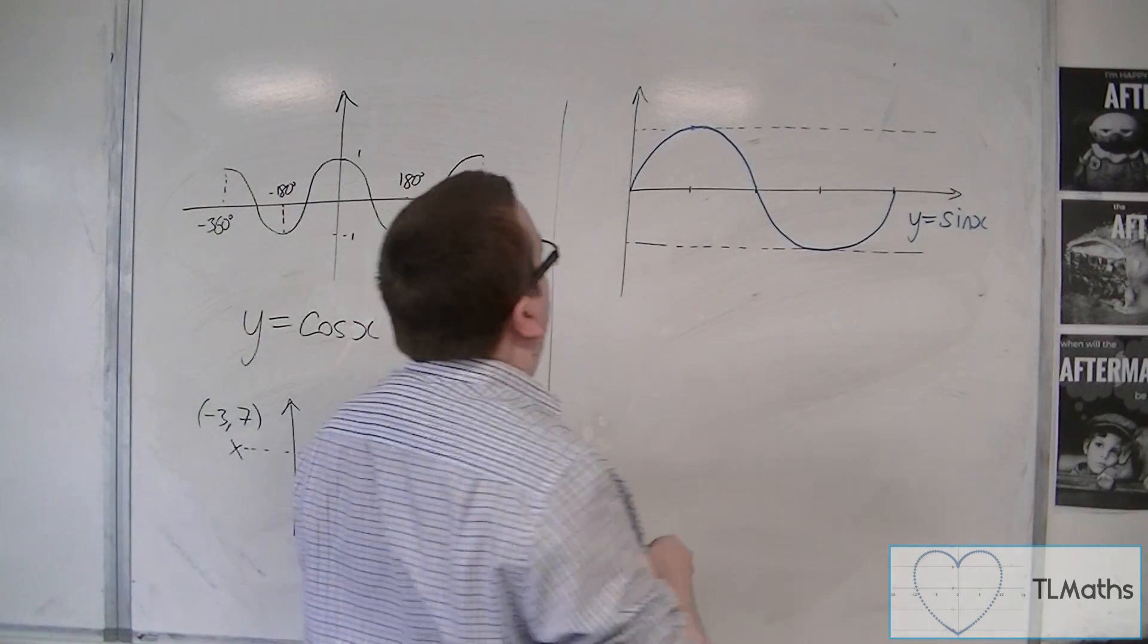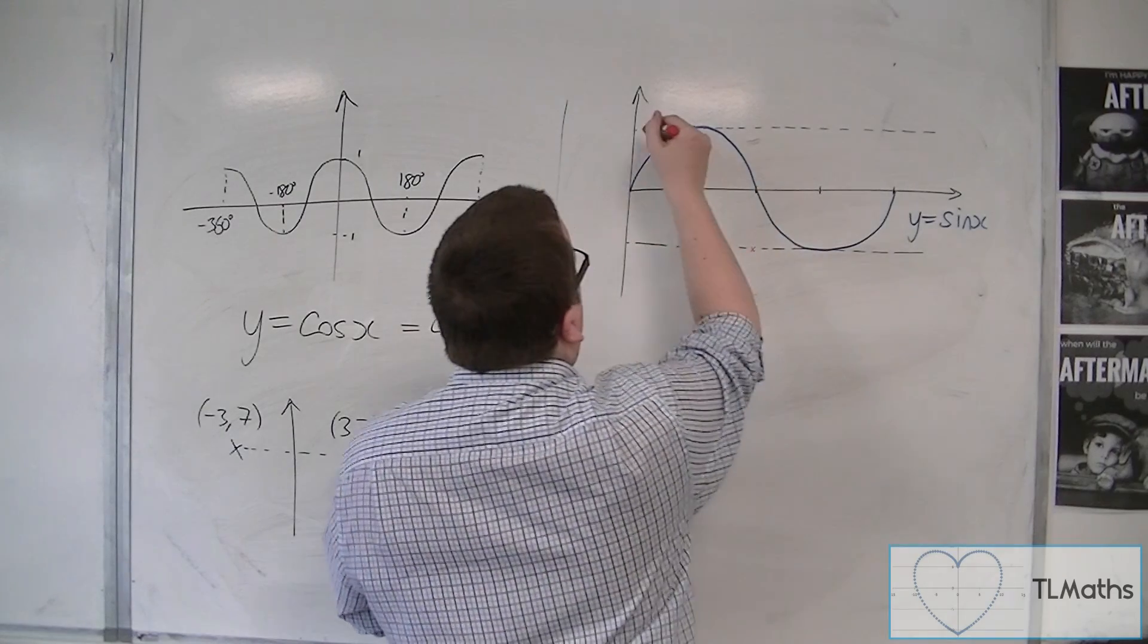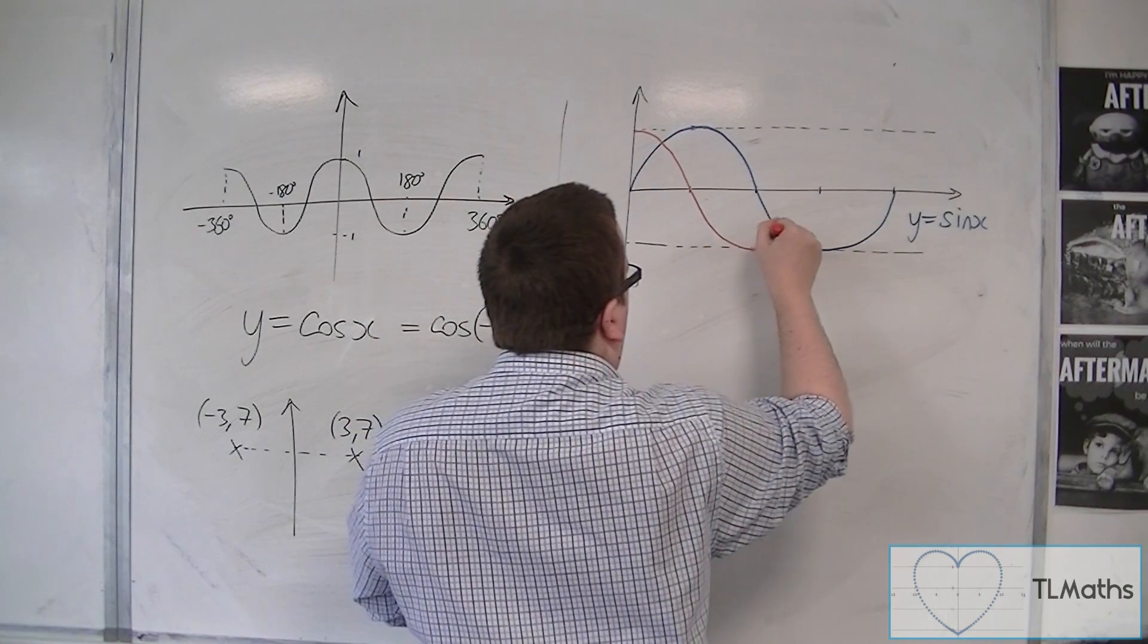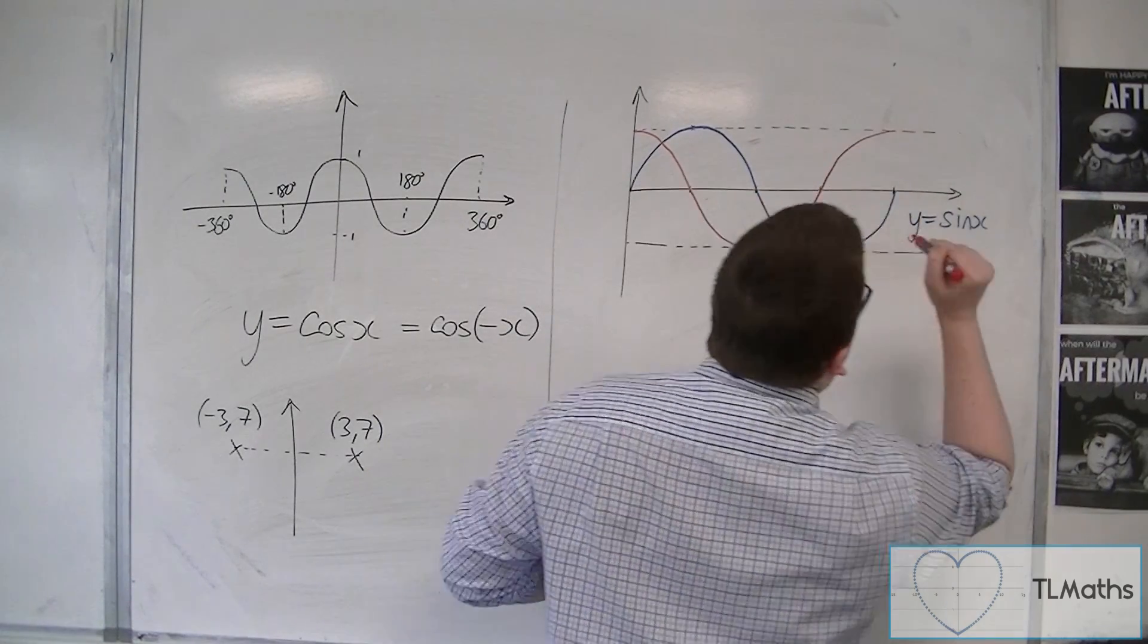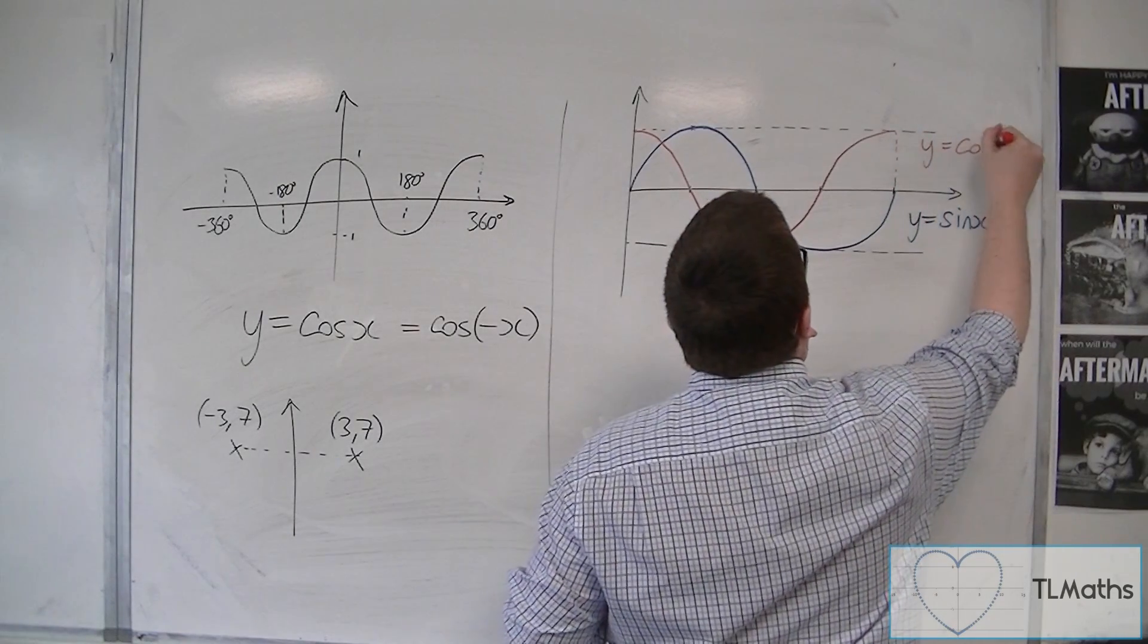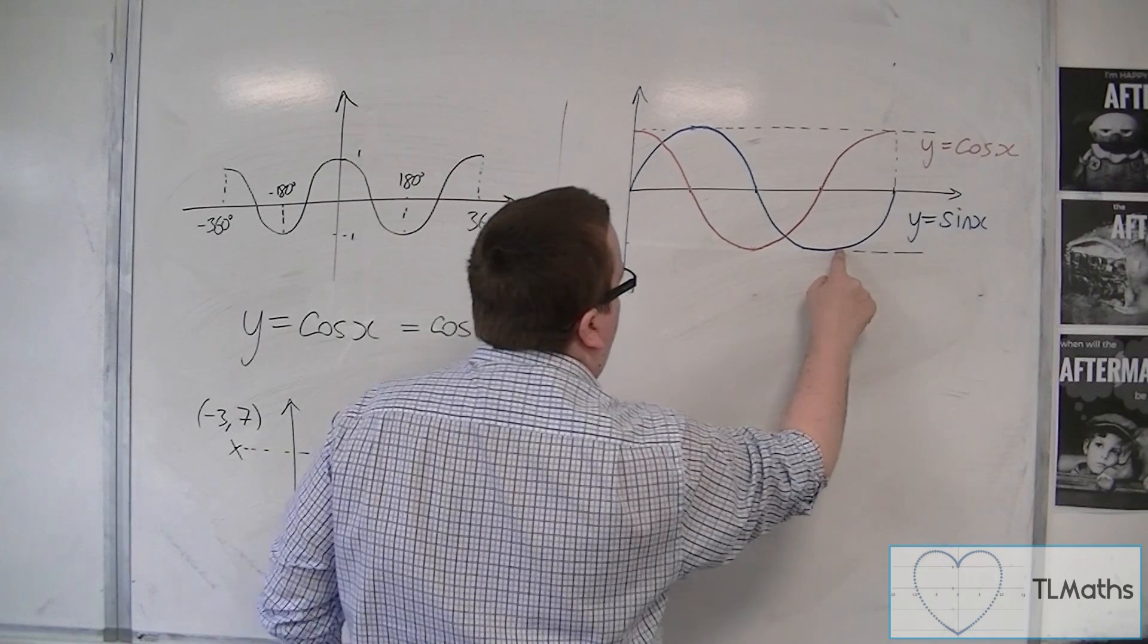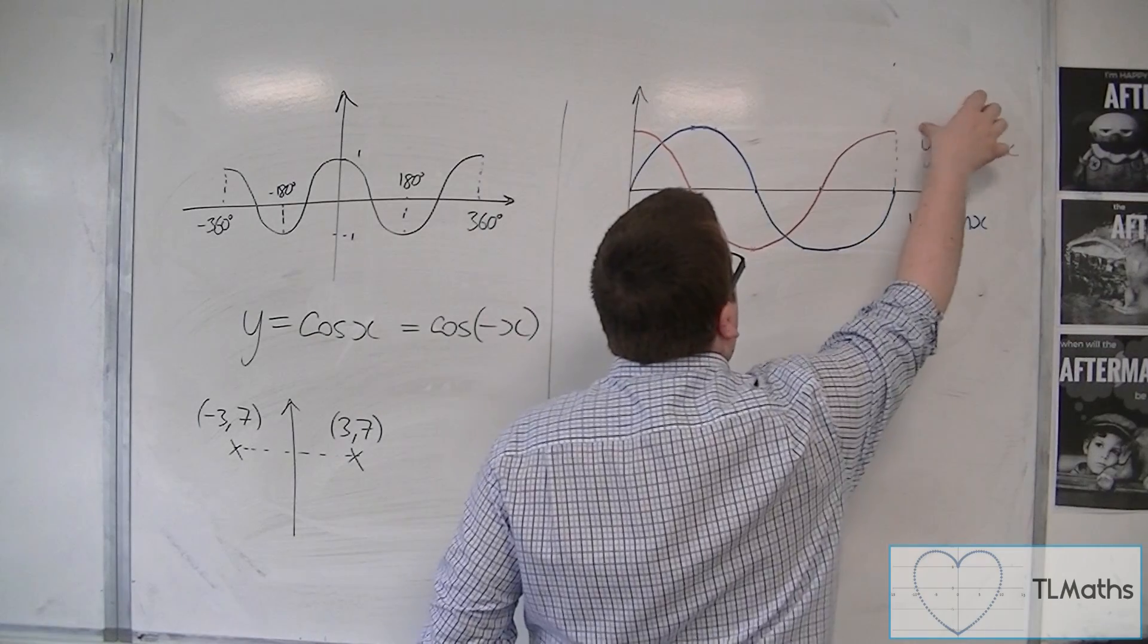And cosine of x. I always find this one a little bit more tricky. Okay, that's not too bad. So, that's y equals cosine of x. So, what I'll do is I'll get rid of those dotted lines.